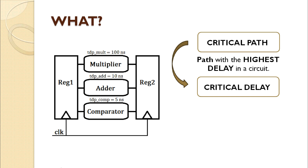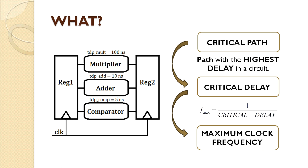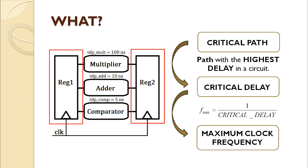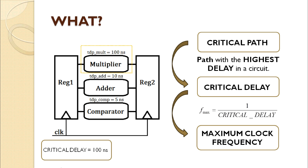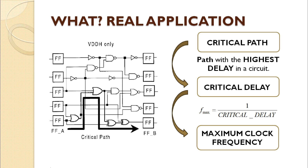This delay is called critical delay, and allows us to set the maximum clock frequency at which the circuit works. In this case, the circuit is based on a set of flip-flops with three combinational circuits between them: a multiplier, another, and a comparator. If we see the delays of the different blocks, we can determine that the maximum delay is reached by the multiplier, with a value of 100 nanoseconds. So, the multiplier will be defined as the critical path, with a critical delay of 100 nanoseconds. Knowing the critical delay, we calculate the maximum clock frequency at which this circuit will work, that is, 10 MHz. If we study a circuit of a real application, we can see that the critical path, indicated with a black arrow, is the one which goes from flip-flop A to flip-flop B.